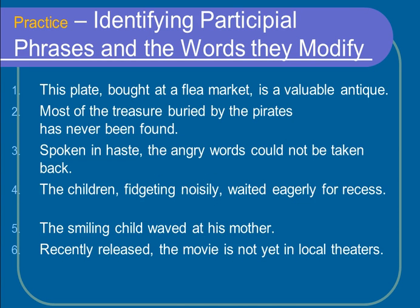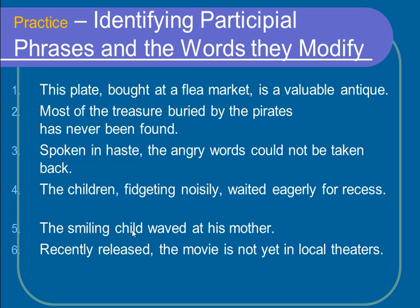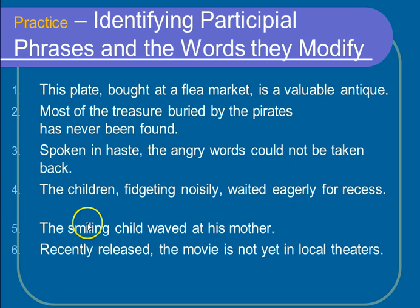Number five: 'The smiling child waved at his mother.' Which child waved at his mother? Smiling. Now, 'smiling' is my participle and it is also my participial phrase, because I can never include the word that the participle is describing inside my participial phrase. Since 'smiling' is describing 'child,' 'child' can never be part of the phrase. So, 'smiling' is both my participle and my participial phrase.